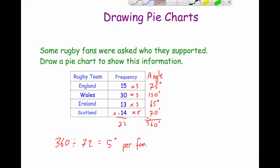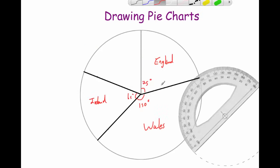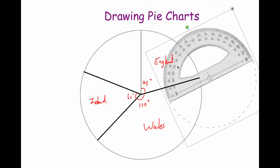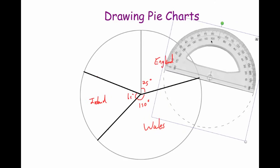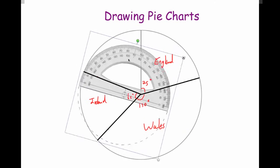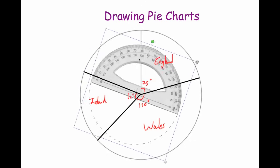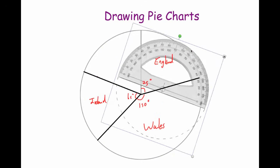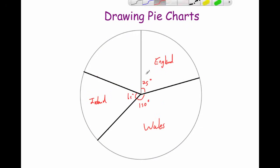Finally, the last sector is Scotland at 70 degrees. This remaining angle should be 70 degrees. I tend to measure it to make sure. Get your protractor, line up zero with the last line drawn, put the cross in the centre of the circle, and confirm it's a 70-degree angle. Move the protractor and label the sector 70 degrees and Scotland. Do all labelling in pencil so you can rub it out if needed.